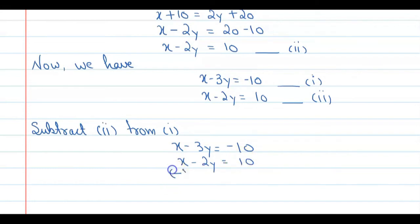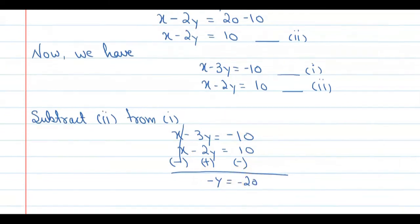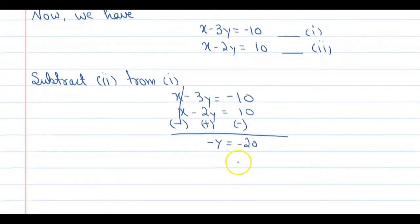Change the sign of each term in Equation 2. The X terms cancel. Minus 3Y plus 2Y gives minus Y. On the right side: minus 10 minus 10 equals minus 20. So minus Y equals minus 20, which means Y equals 20.